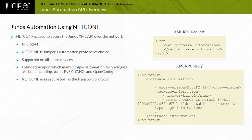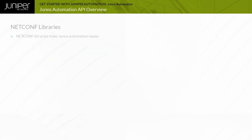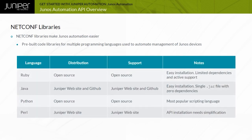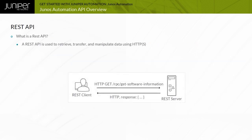In most cases, NETCONF uses SSH as the transport protocol, although RFC 6241 enables other options such as Transport Layer Security or TLS. Libraries that make automating your network easier are available for multiple programming languages. These libraries provide simple and flexible options for connecting to Junos devices using NETCONF and leverage the Junos XML API for management.